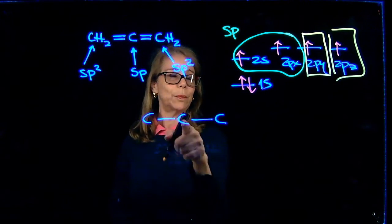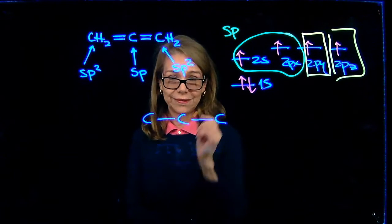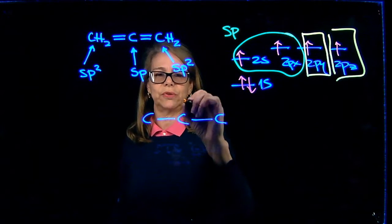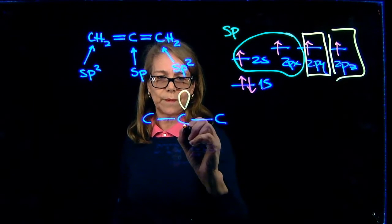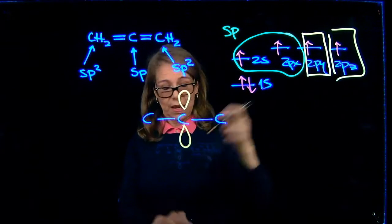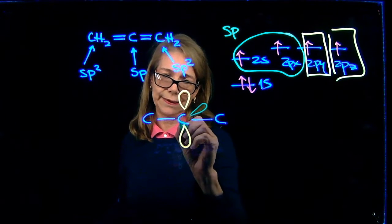So the central carbon is SP. So I'm going to have two P orbitals that are unhybridized. And they are perpendicular to each other. So I'm going to draw one of the P orbitals. The other is perpendicular to the first. So I'm going to draw it inclined here.